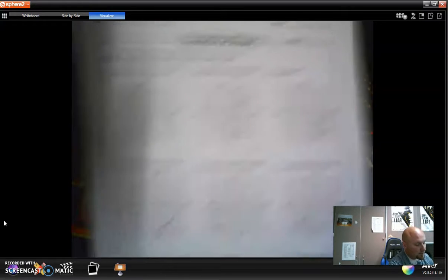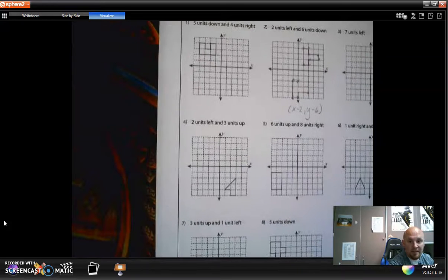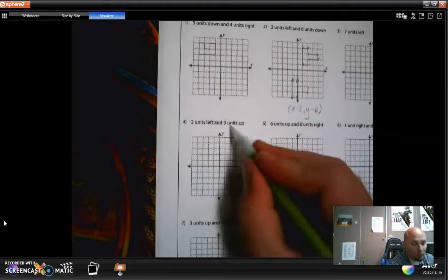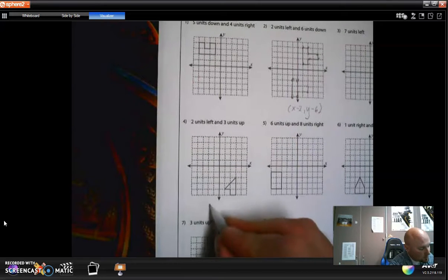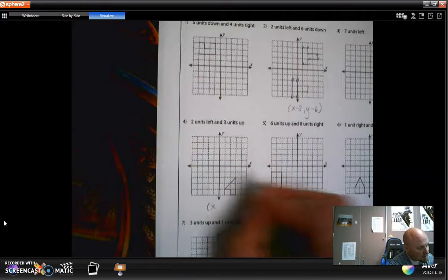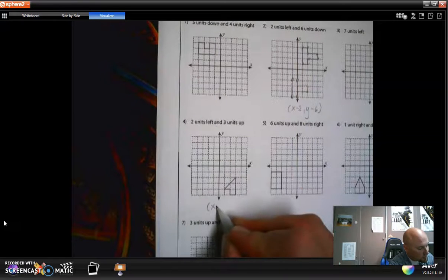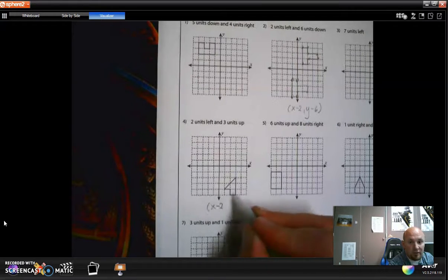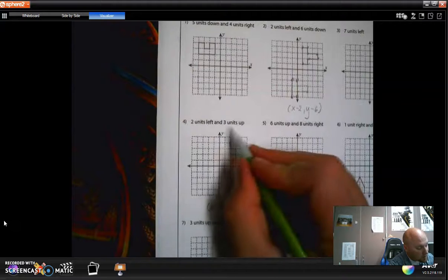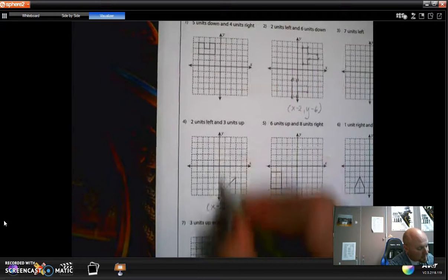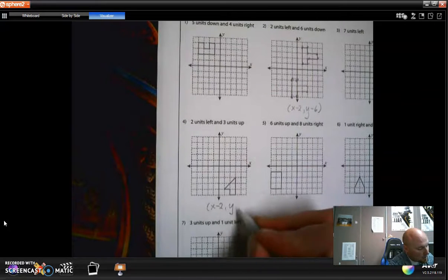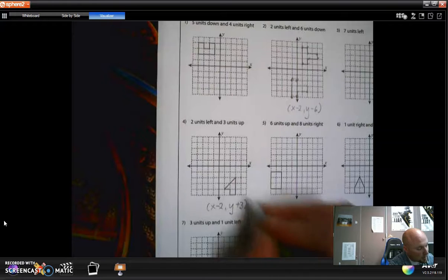Let me do one more. Let me do number four. Here we go, so you can see it. Two units left, two units left on the x-axis. That means we're going back two, we're going left two. Negative two. Three units up. That's the y-axis, that's up and down. That's y plus three. We're going up three.